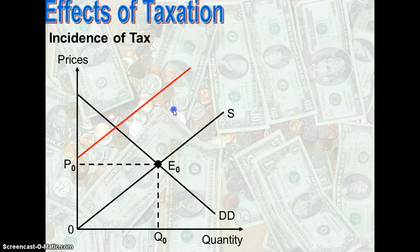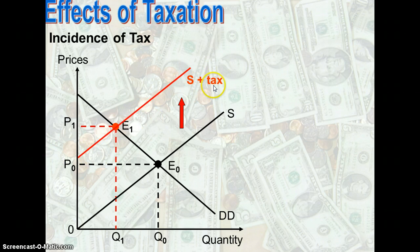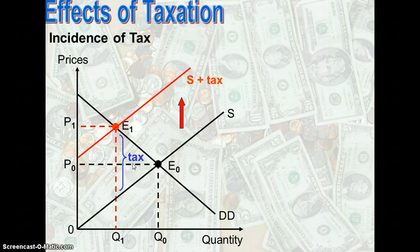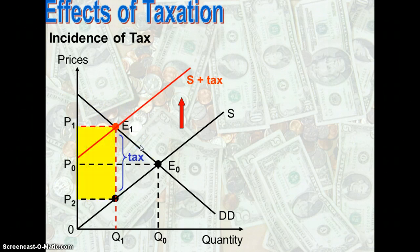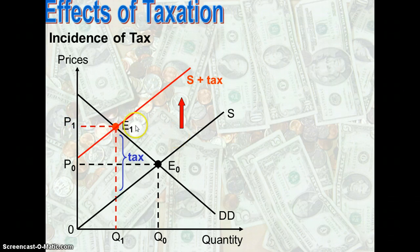The supply curve will shift up by the amount of tax imposed. The red color supply curve is the new supply curve with the amount of tax imposed. The vertical distance between the black color supply line and the red color supply line is the amount of specific indirect tax imposed — this is why it is a shift of the supply curve. Therefore, the new equilibrium is at E1, where the product will be priced at P1. After the tax is imposed, the product will be priced at a higher price level, P1.